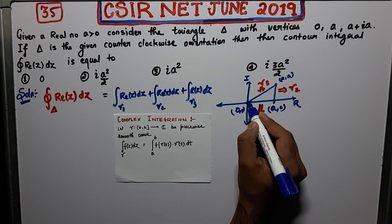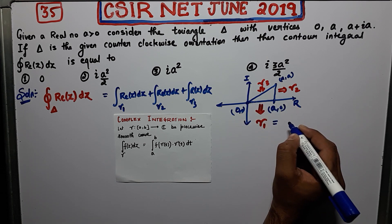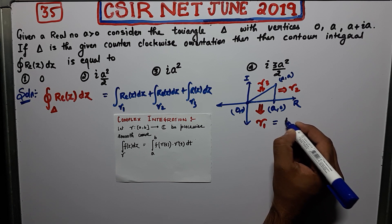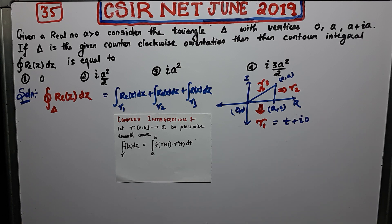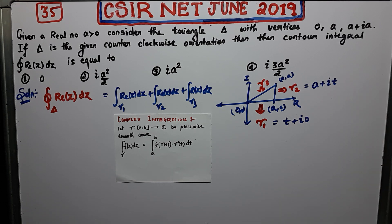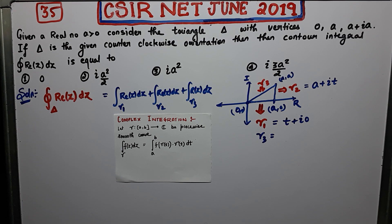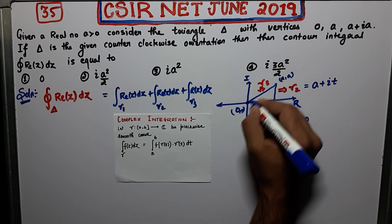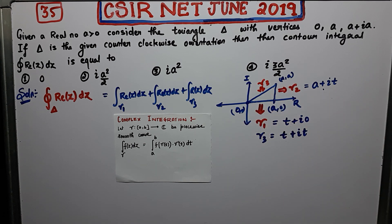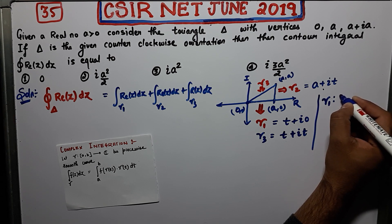So what will be the parametrization? Gamma 1 lies along the line y = 0, so x is varying and y = 0. You can write this as t + i·0. For gamma 2, x is constant at a but y is varying, so you parametrize it accordingly. For gamma 3, the line is y = x, meaning both coordinates vary, so the parametrization reflects that. This is the line y = x, whereas gamma 2 is the line x = a.